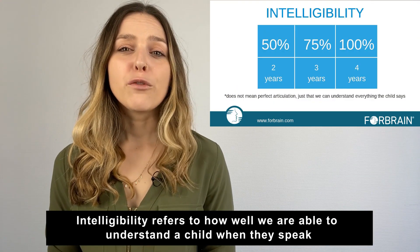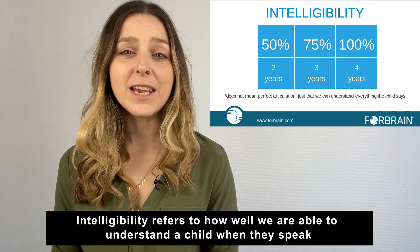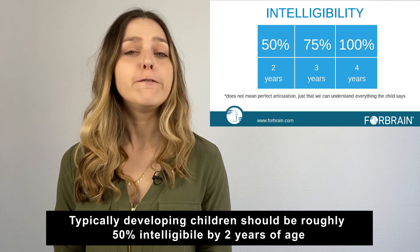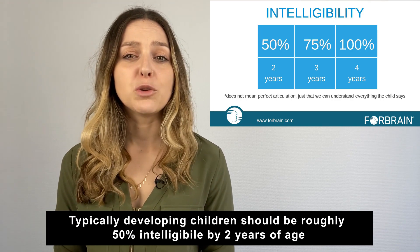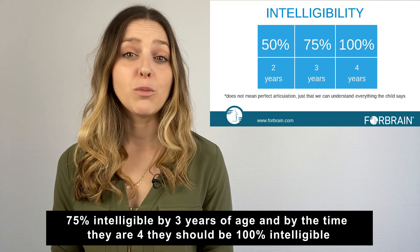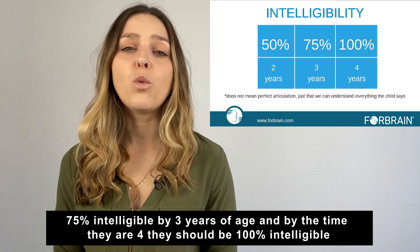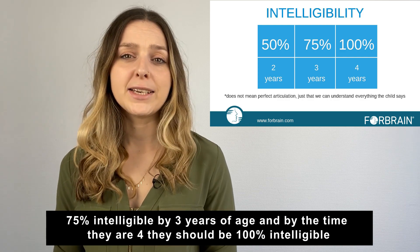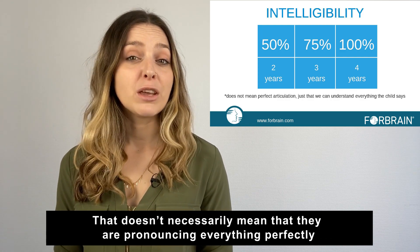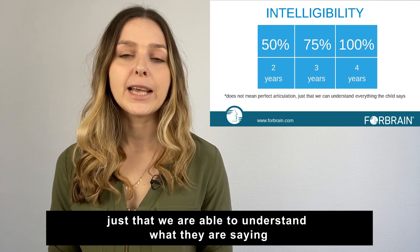Intelligibility refers to how well we are able to understand a child when they speak. Typically developing children should be roughly 50% intelligible by two years of age, 75% intelligible by three years of age, and by the time they're four they should be 100% intelligible. That doesn't necessarily mean that they are pronouncing everything perfectly, just that we are able to understand what they are saying.